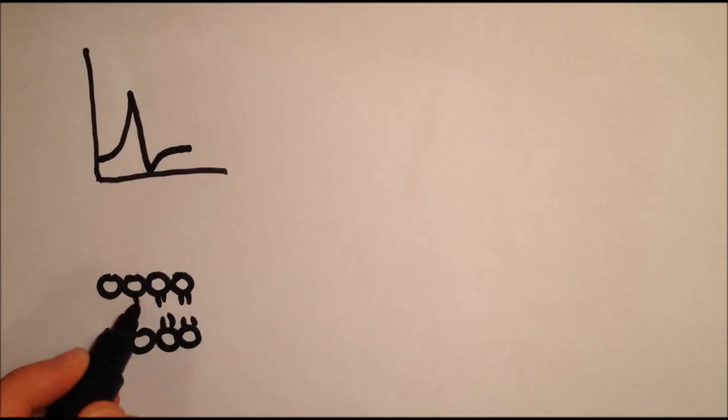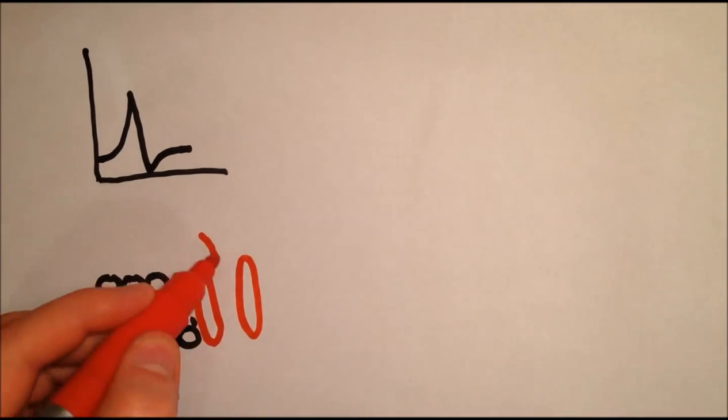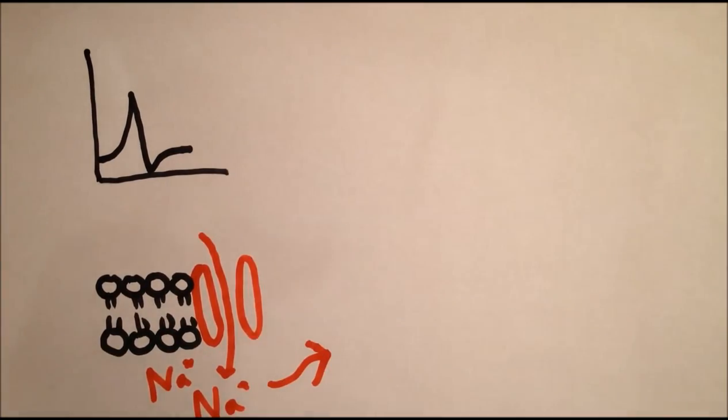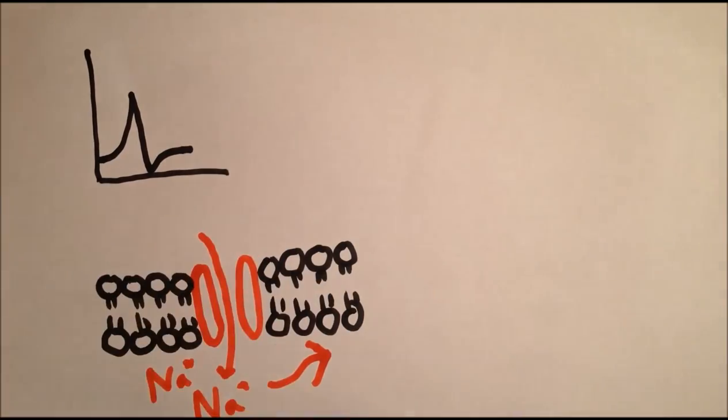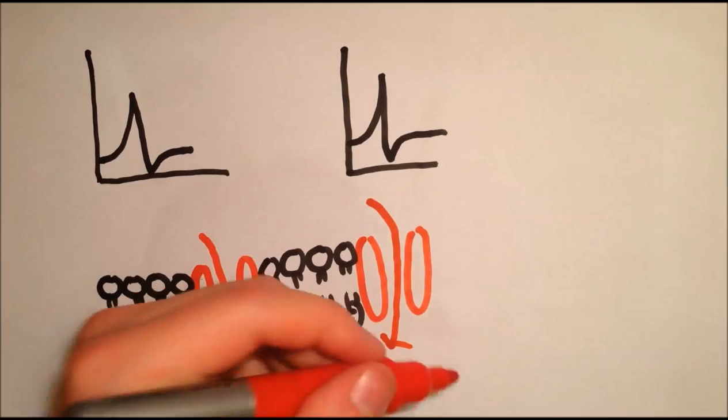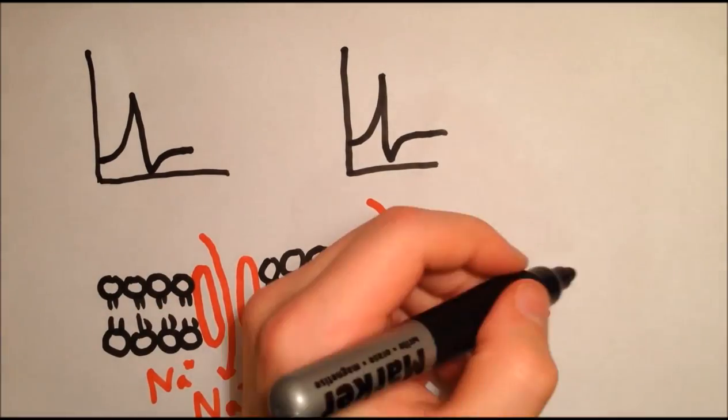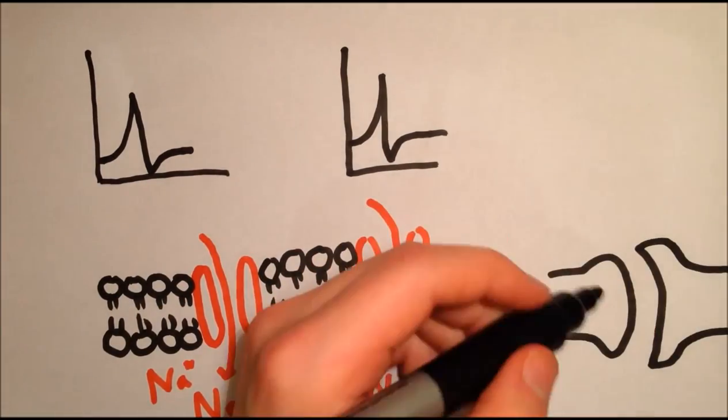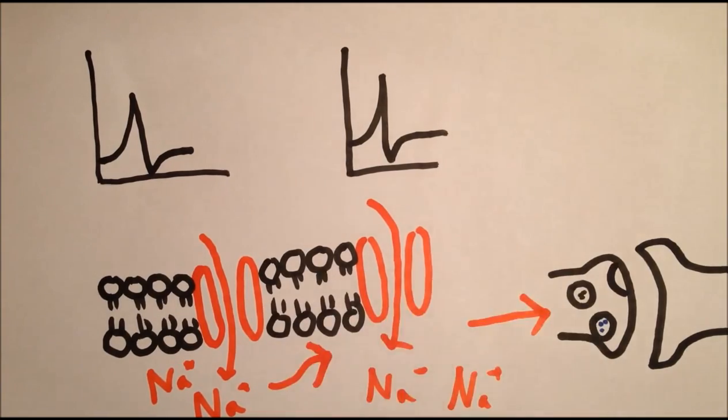When an action potential occurs at a section of membrane, sodium flows in and the inside of the cell at that point becomes more positive. Some of these positive ions diffuse sideways, and this triggers an action potential at an adjacent section of the membrane. This allows the action potential to propagate along the axon until it reaches an axon terminal.